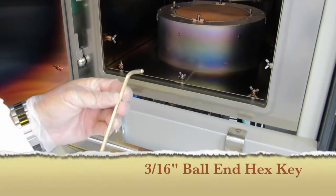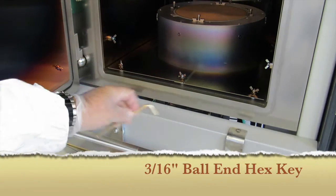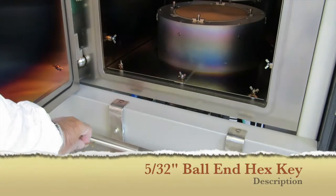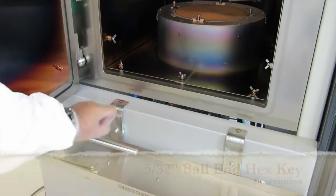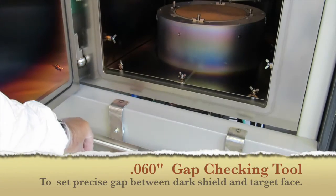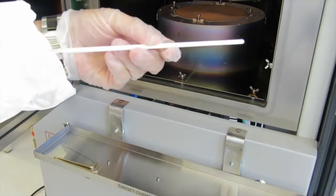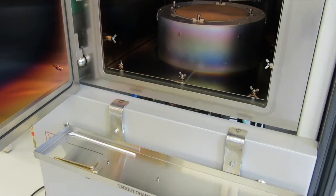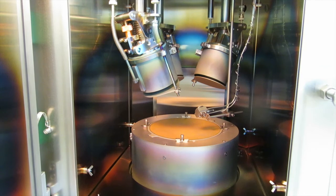This tray has all the tools you'll need for swapping targets. The first tool is a 3/16ths ball-end hex key. The second tool is a 5/32nd inch ball-end hex key. This tool is a spacer for setting the space between the dark shield and the target base. This white plastic tool helps in installing magnetic targets so they don't slam onto the face of the magnetron.